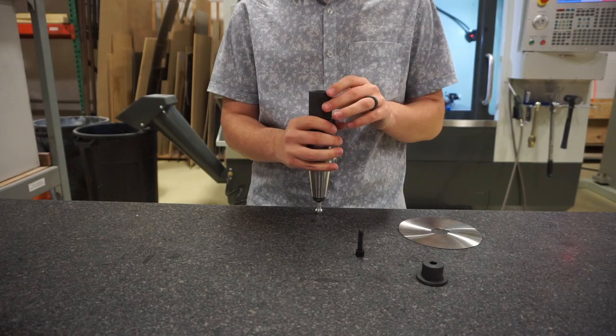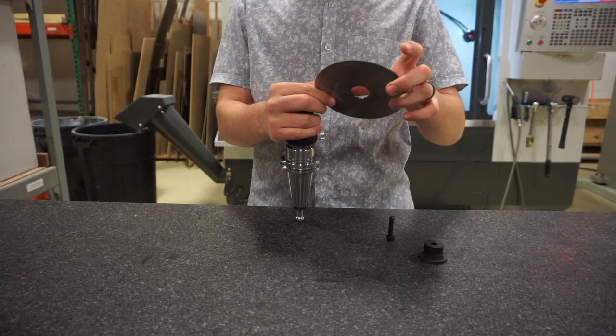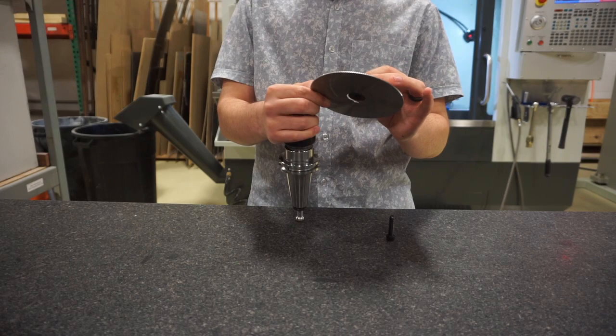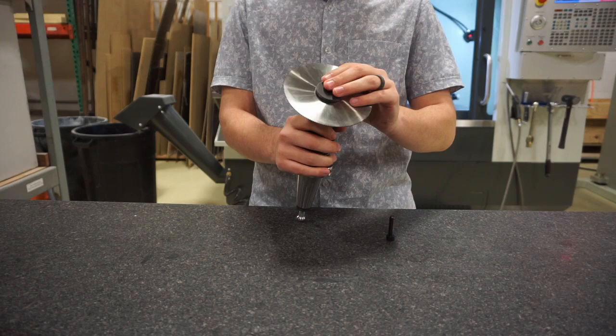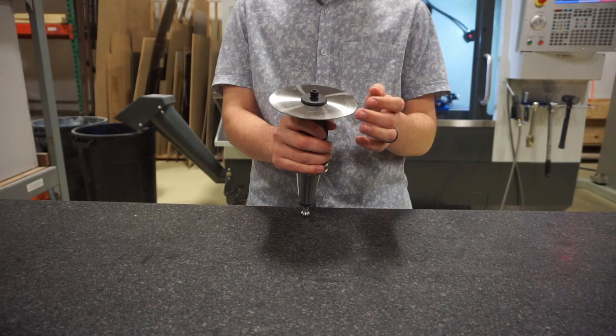All right, so now that we have our arbor loaded into our holder, the next step we're going to take is loading our saw blade onto the arbor. Again, we want to wipe each of these surfaces down by hand to ensure there's no dust or debris. We'll want to pay close attention to make sure that we have our teeth facing in the correct direction. The direction you're going to want those teeth in is such that if the saw blade were to slip, it would cause the screw to tighten. So lefty-loosey, righty-tighty on this particular arbor, though your case may be different.